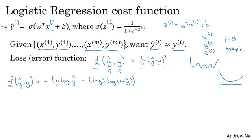Here's some intuition for why this loss function makes sense. Keep in mind that if we're using squared error, then you want the squared error to be as small as possible. And with this logistic regression loss function, we'll also want this to be as small as possible. To understand why this makes sense, let's look at the two cases. In the first case, let's say y is equal to 1, then the loss function y hat comma y is just this first term, right? And there's a negative sign. So it's negative log y hat if y is equal to 1, because if y equals 1, then the second term 1 minus y is equal to 0.